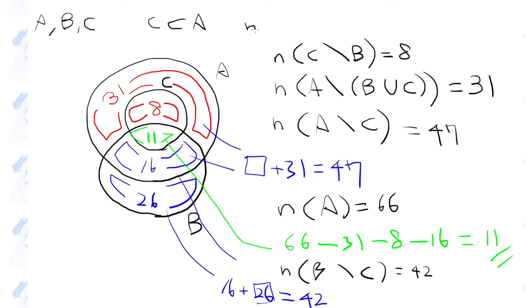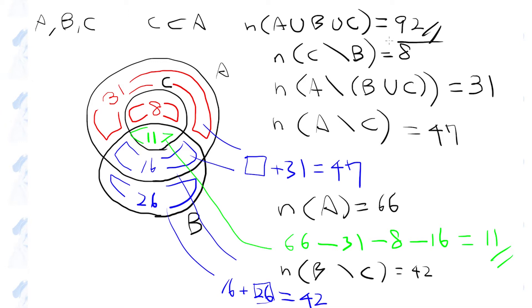Therefore, the number of elements in set A or set B or set C is 31 plus 8 plus 11 plus 16 plus 26, which equals 92. So this is the answer.